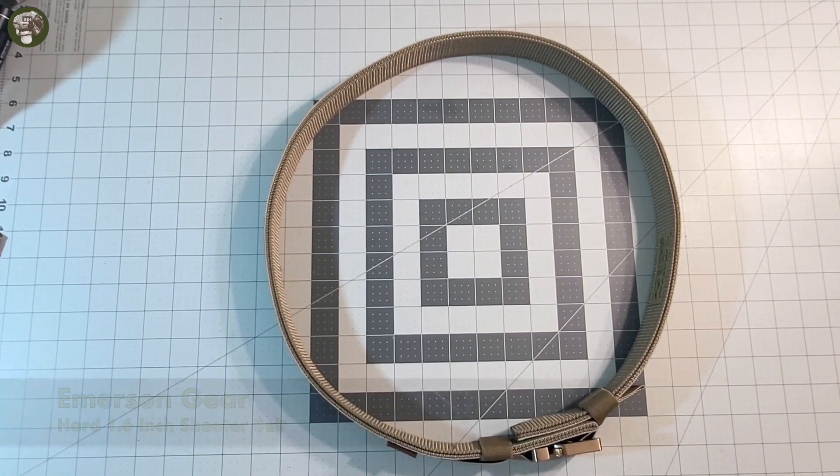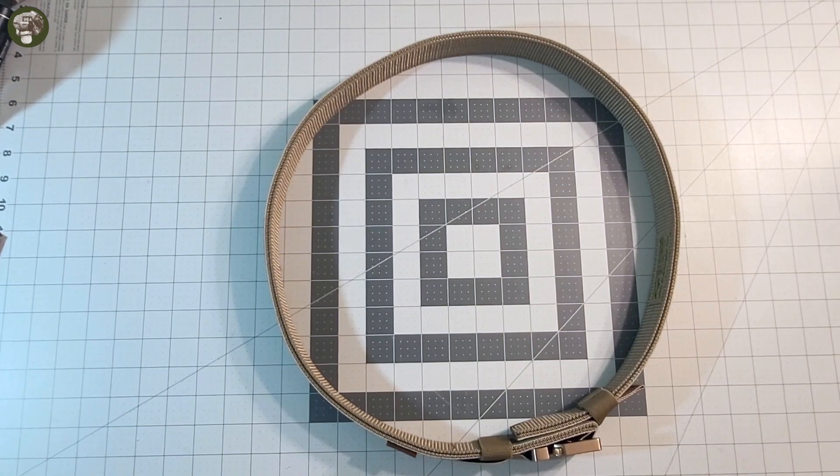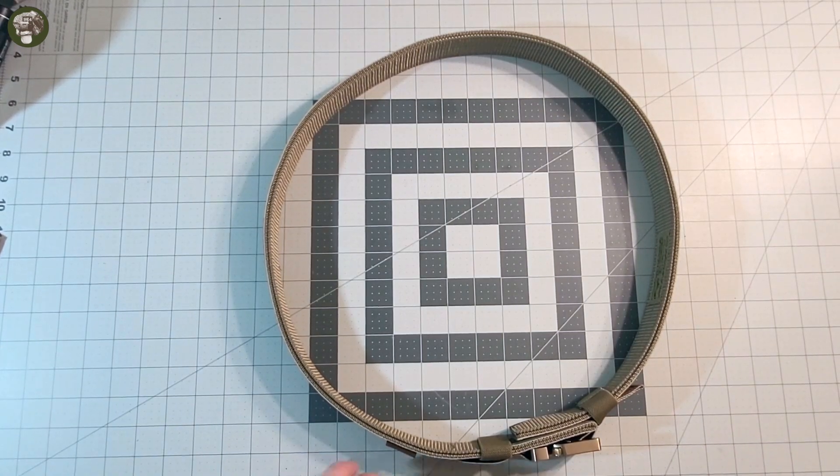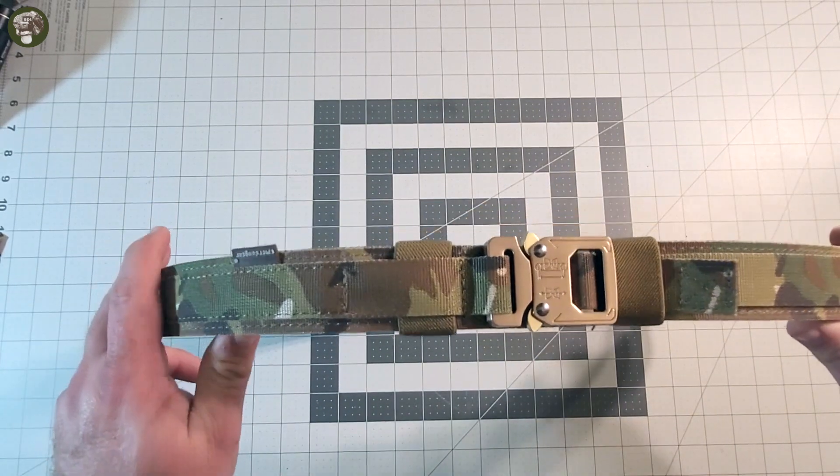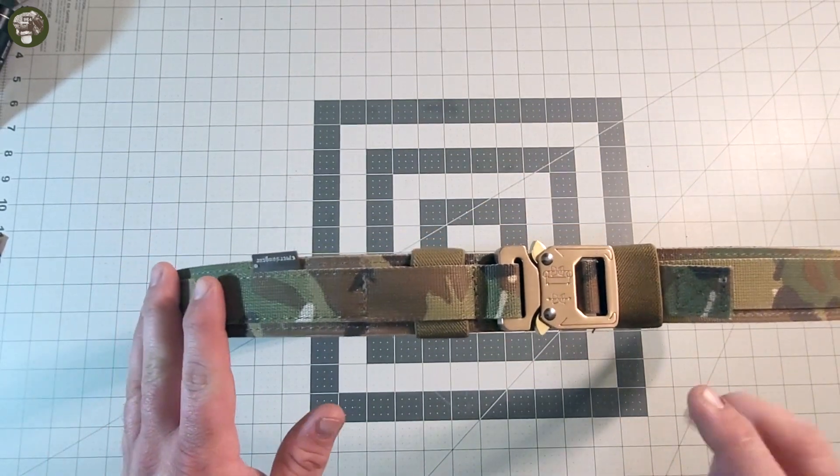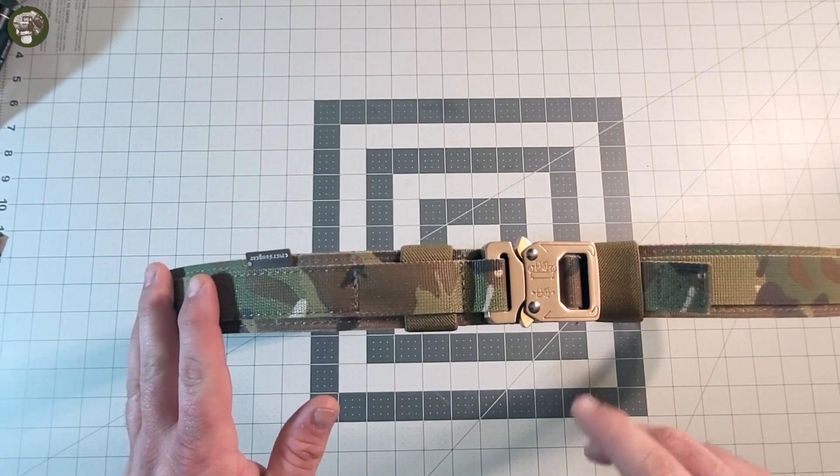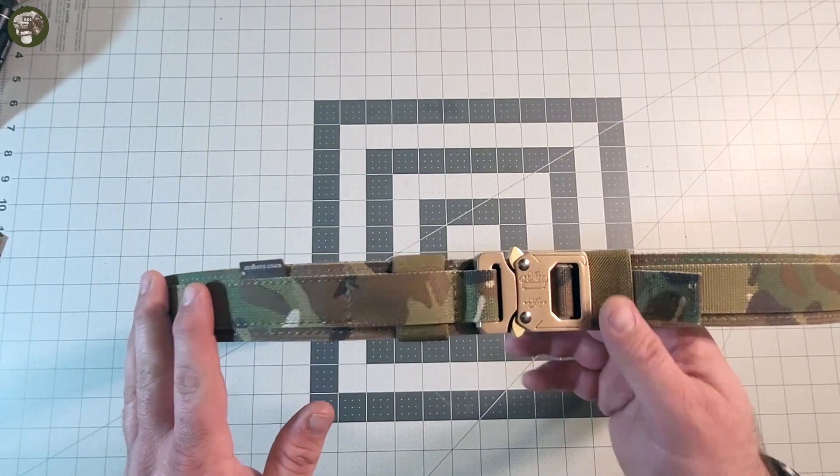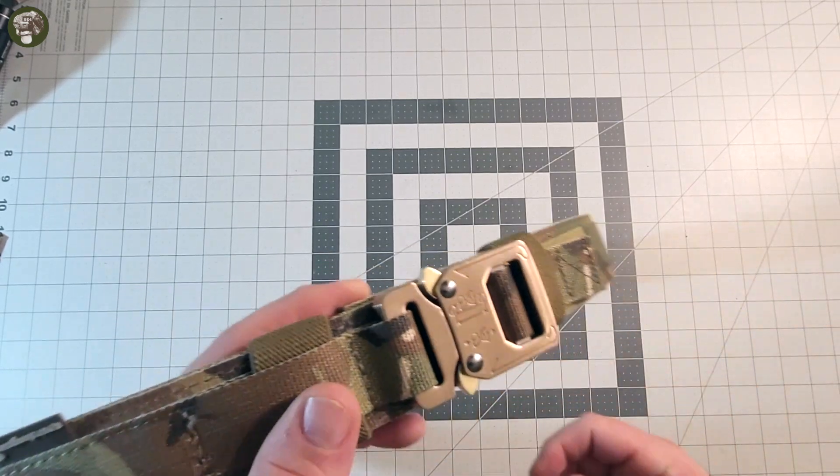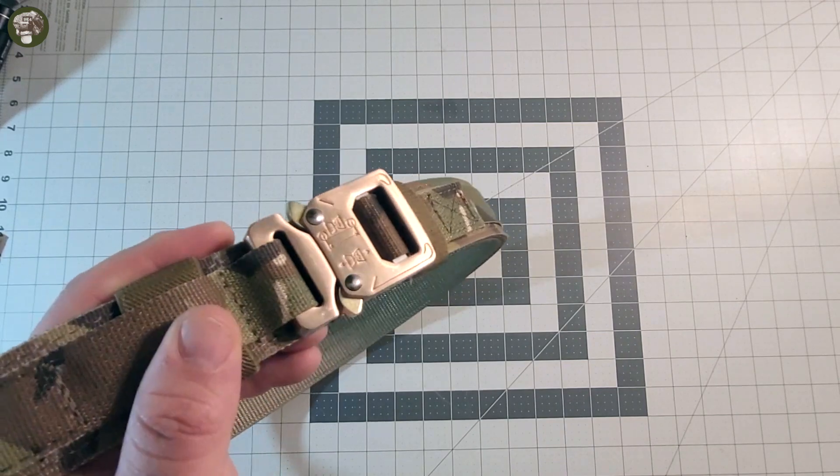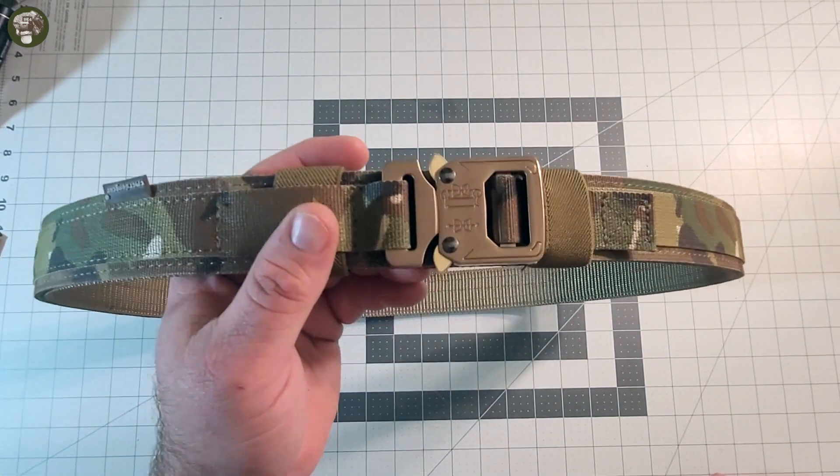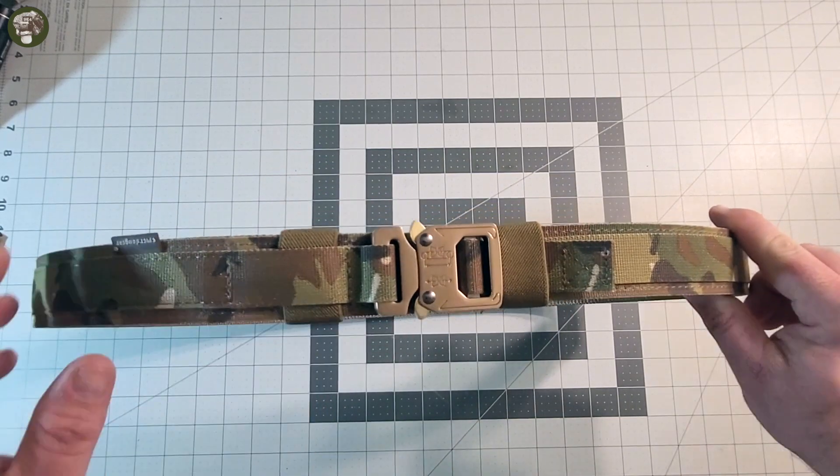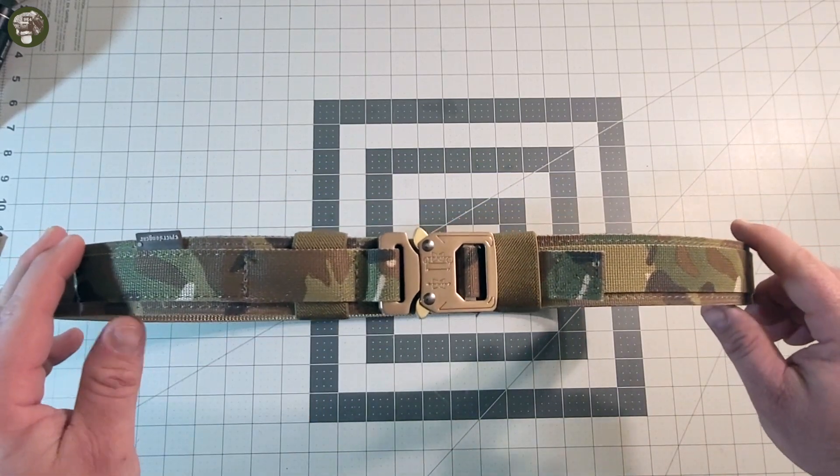Today we're looking at an Emerson Gear 1.5 inch shooter belt in multi-cam. This is the one off Amazon and probably numerous other locations. It's got the little gold cobra buckle here in the front, and boy is it ever gold. Very shiny, kind of rose gold color, way shinier than I expected. I thought it was more of an FDE. Boy, was I mistaken.